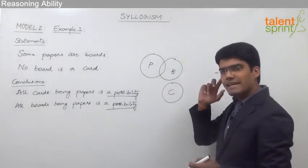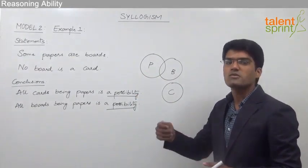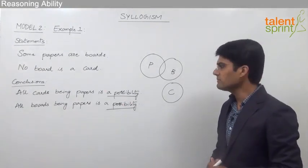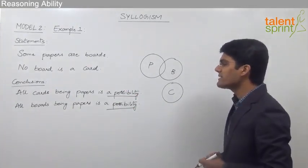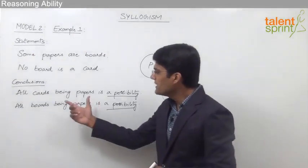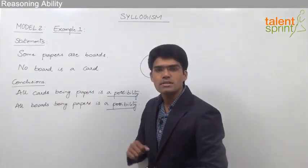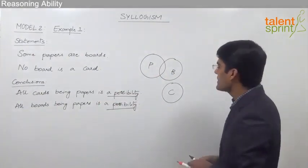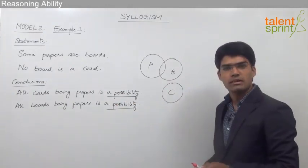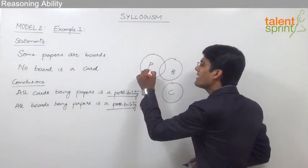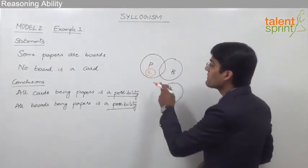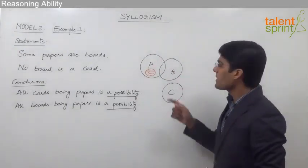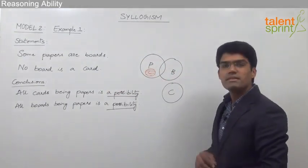Instead of checking various diagrams, let us look at the given conclusion in terms of possibility and understand whether we can draw a diagram for it or not. The first one is all cards being papers is a possibility. We know from the statements that no board is a card. In the basic diagram cards are shown separately, but it is also possible to take all the cards inside the papers. Here we find that all the cards are papers as they are completely inside the papers, and it also follows the given statements.